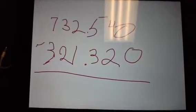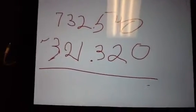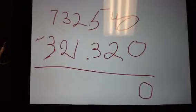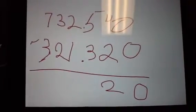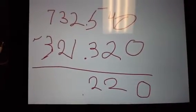This is our second equation. So 0 minus 0 which is 0 obviously. 4 minus 2 is 2. 5 minus 3 is 2.